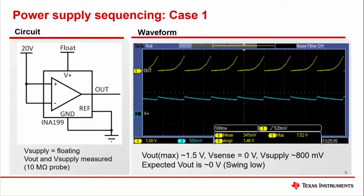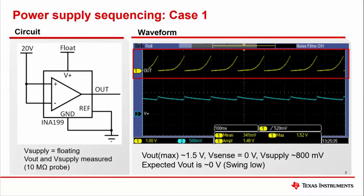The waveform observed on the output pin of the INA199 was generated under the conditions illustrated in the circuit shown. From the scope shot we can see that without a supply voltage this particular device exhibits small periodic waveforms. This behavior can potentially cause problems if not accounted for during the design phase of a project. The device will work correctly when biased, but while in the absence of its supply power it can potentially trigger a downstream device that takes various corrective actions that shut down the system.